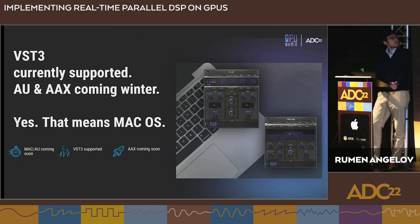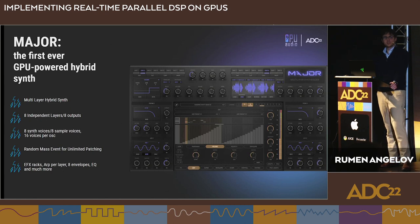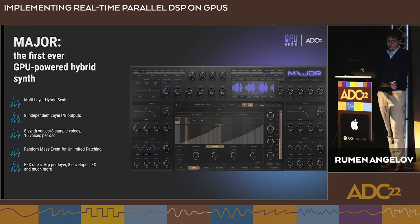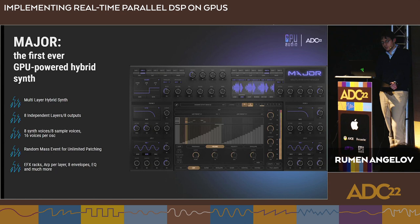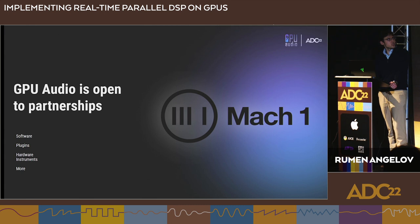VST3 is currently supported and we're working on implementing Audio Units and AAX on macOS. For a big surprise, we are also working on a synthesizer — a hybrid eight-layer synthesizer with eight independent layers, 16 voices per oscillator, different envelopes, an internal cascade of effects such as chorus, EQ, delay, and a spectrum analyzer. We're also currently working with Mach1 on providing multi-channel solutions based on our GPU audio platform.